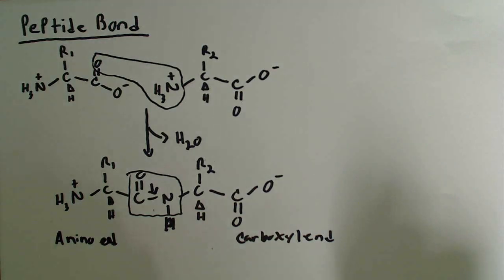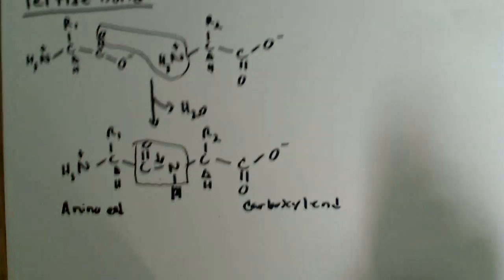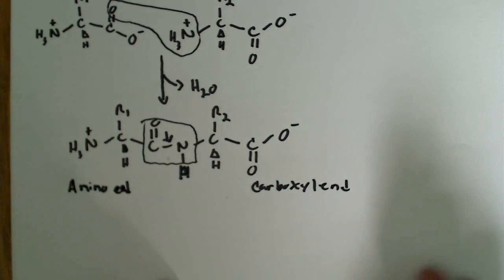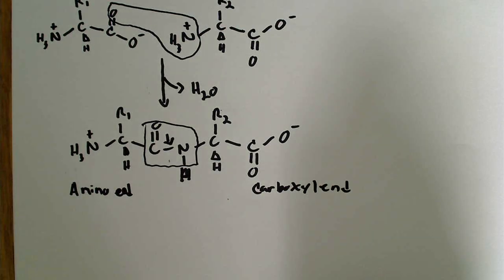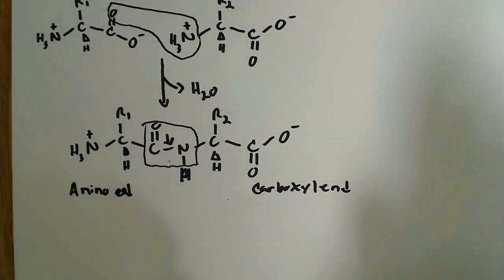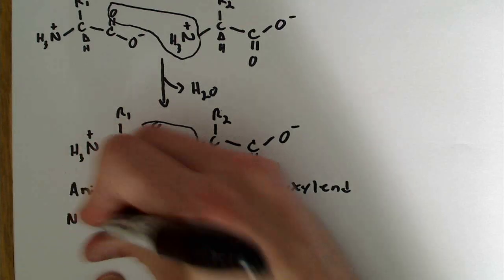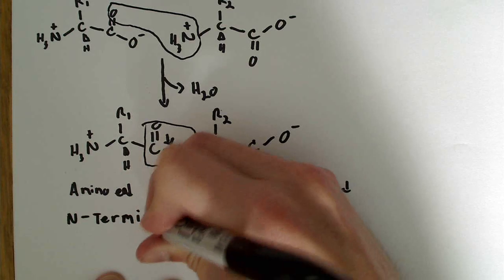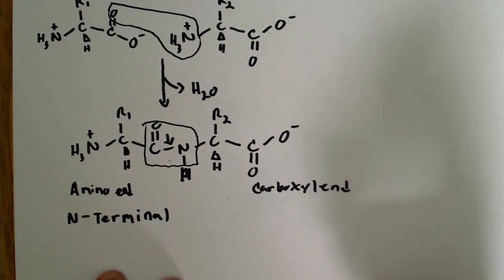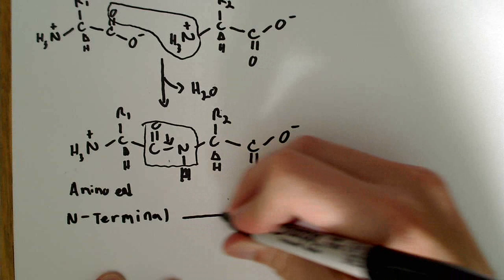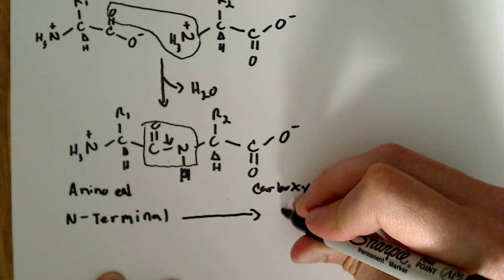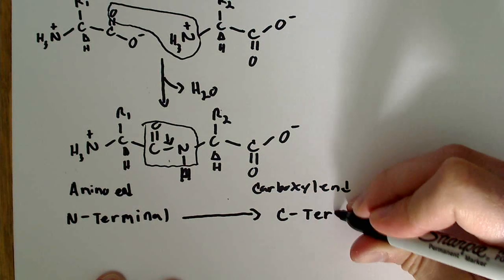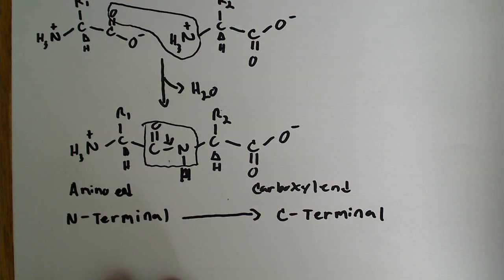Now, the other important point that I wanted to make about this was that whenever you have one of these peptides, whether it's a dipeptide in this case, just two amino acids, or it's some kind of polypeptide, which has many, many amino acids, you're always going to draw them from the N-terminal over to the C-terminal. They'll always be N-terminal to C-terminal. That's the direction of the peptide chain.